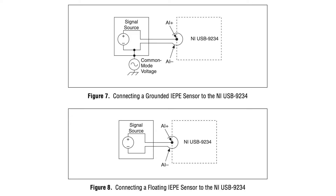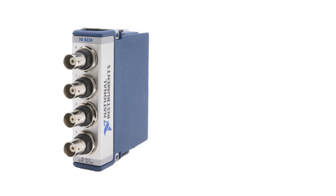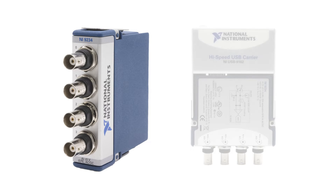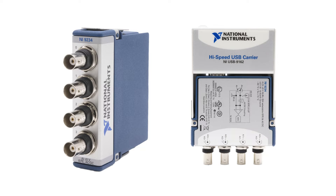Floating signal sensors or ground-referenced signal sensors can also be linked to the NI-USB9234. The NI-USB9234 utilizes analog and digital filtering to deliver a precise depiction of in-band signals, while also discarding out-of-band signals.